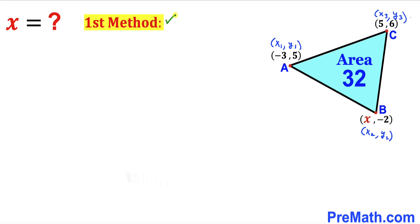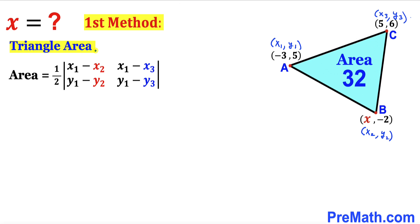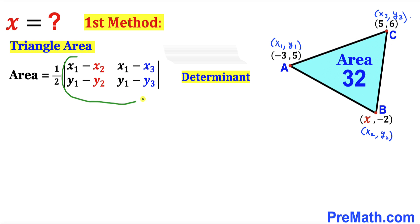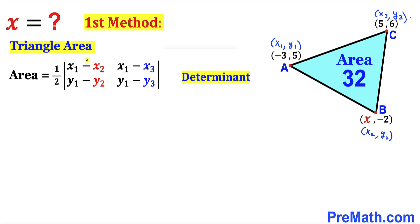Here's our first method. Let's recall the area of a triangle formula when we have been given three vertices, where this notation is called the determinant. The triangle area is equal to one-half times the determinant of x1 minus x2, y1 minus y2, x1 minus x3, and y1 minus y3, where x1, y1, x2, y2, and x3, y3 are our vertices. The area is already given to us as 32.